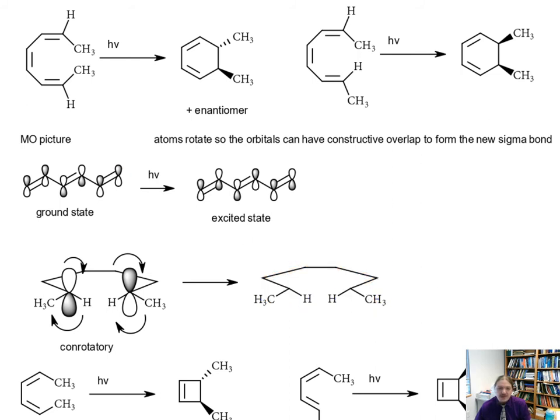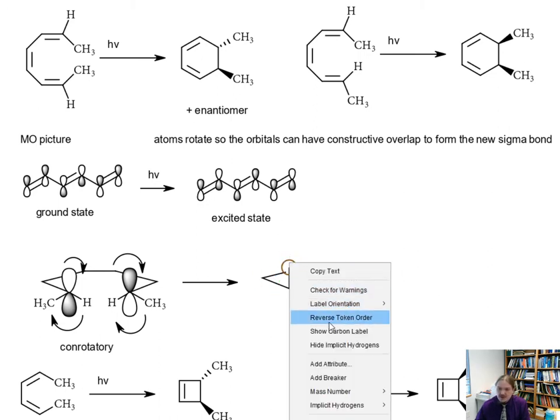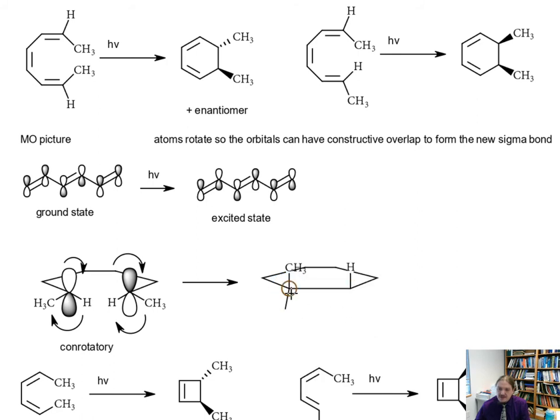Once this rotation has happened, one of our atoms is rotating clockwise, the other one is rotating also clockwise, or they could both rotate counterclockwise I suppose. In fact, if we get the other rotation you'd get the other enantiomer. We get conrotatory motion.